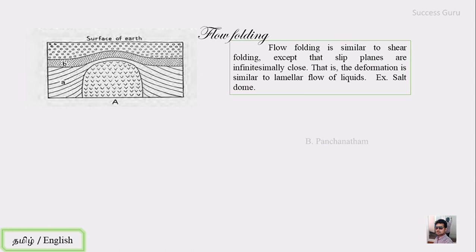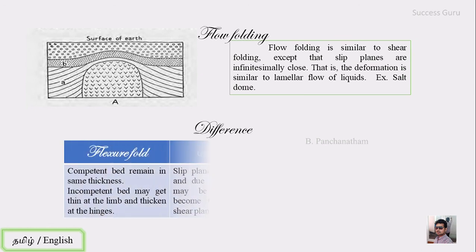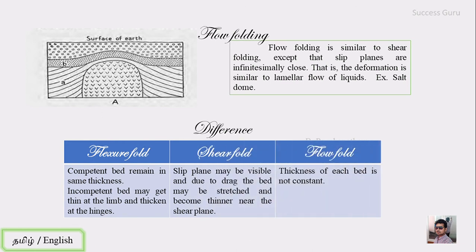The three differences are: a Flexural Fold maintains the same thickness of layers; a Shear Fold is layer parallel; and a Flow Fold is also layer parallel but driven by fluid-like movement.